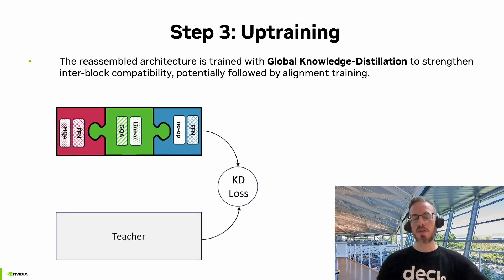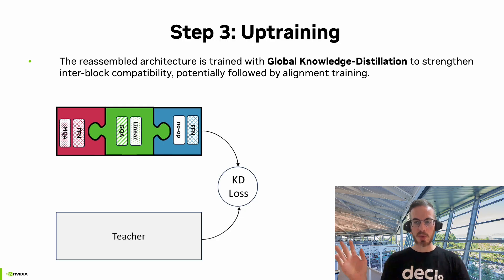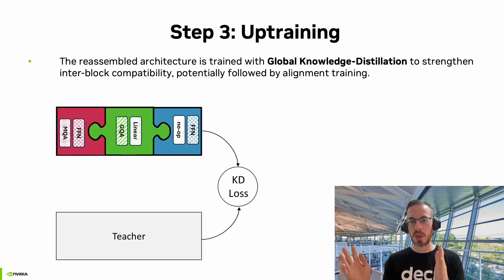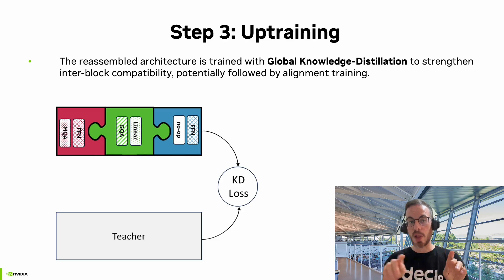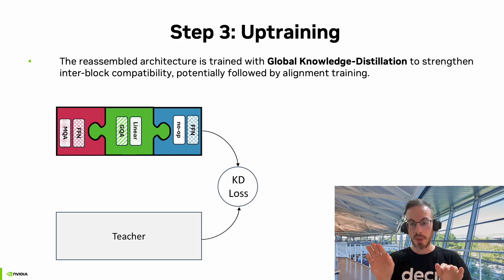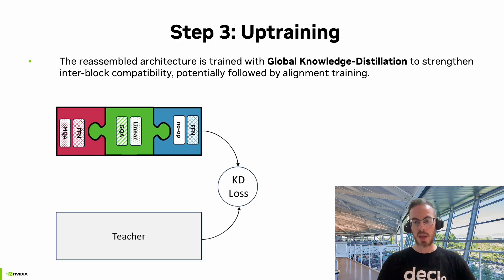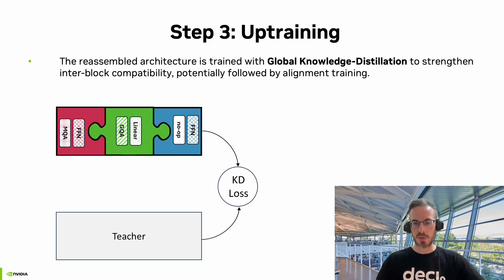The third and final stage is up-training, where we take this reassembled model architecture and train it end-to-end using global knowledge distillation from the original parent model. This stage strengthens the inter-block compatibility of the blocks that were trained separately, and potentially we also follow it by alignment training, for example for reasoning or instruction following.